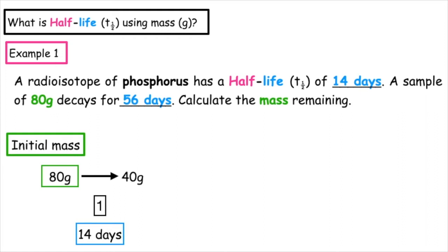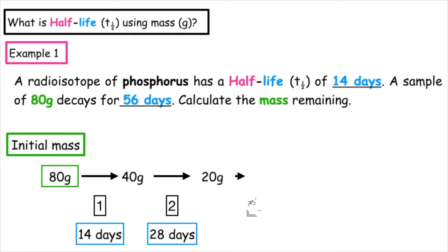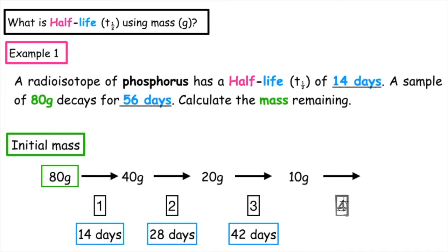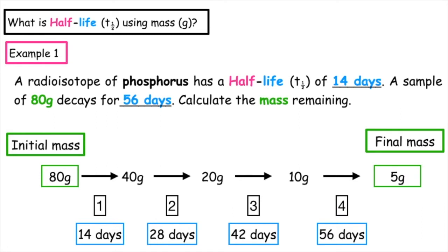The 40 grams undergoes a second half-life to produce 20 grams — a total of 28 days. The 20 grams undergoes a third half-life to produce 10 grams — a total of 42 days. Then 10 grams undergoes a fourth half-life to produce 5 grams, giving a total of 56 days. 4 times 14 equals 56, so the final mass is 5 grams.